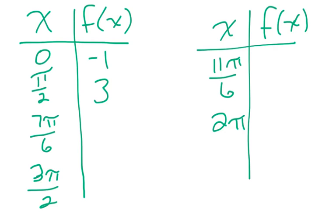When I plug in 7 pi over 6, I should get negative 3 over 2. When I plug in 3 pi over 2, I should get negative 1. And, when I plug in 11 pi over 6, I should get negative 3 over 2. And, when I plug in 2 pi, I also get negative 1.